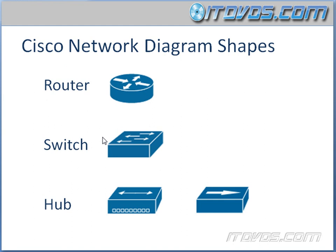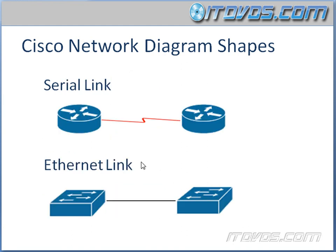We're going to see some symbols over and over when we look at diagrams for Cisco equipment. The first is a router — represented by a cylinder with various arrows on it. There's also a symbol for a switch, and symbols for a hub. These are standard symbols Cisco uses when we diagram our networks. In diagrams, we also have links between devices — a serial link is normally characterized by a red lightning bolt between two devices such as routers.